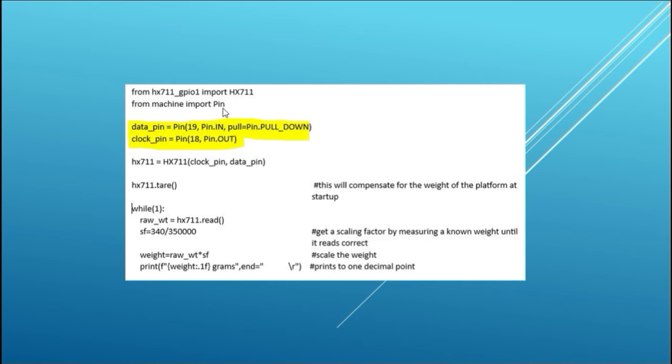Next, the serial data and clock pins on the Pico Pi are defined as GPIO pins 19 and 18 respectively. Next, an instance of the HX711 is created and the data and clock pins are passed in as arguments to the library.